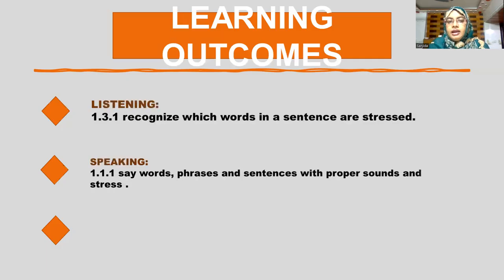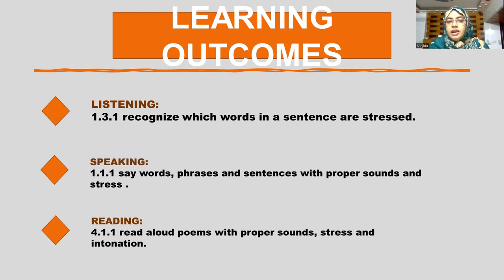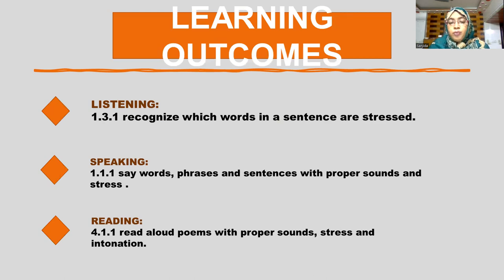Today's lesson is about city and country. The learning outcomes are listening, speaking, and reading. In listening, we can recognize which words in a sentence are stressed. In the speaking skill, we can say words, phrases and sentences with proper sounds and stress. In the reading skill, we can read aloud poems with proper sounds, stress and intonation.